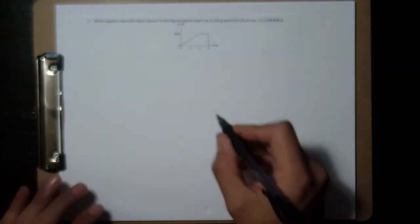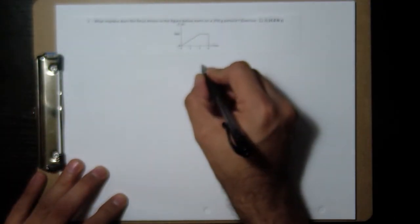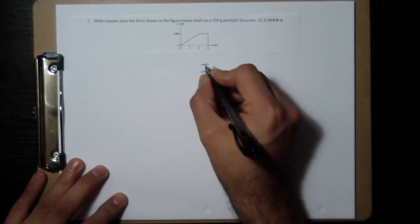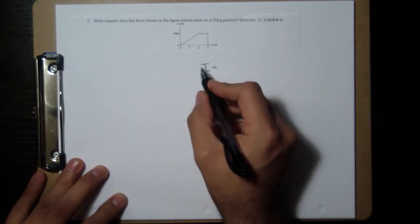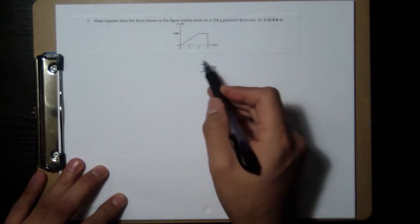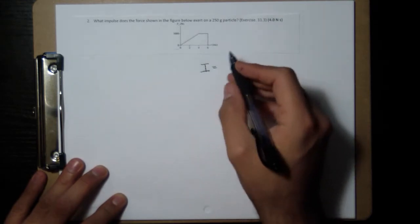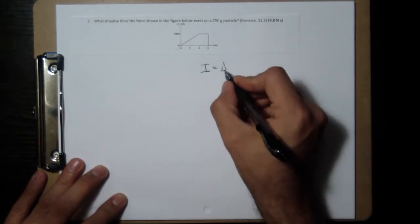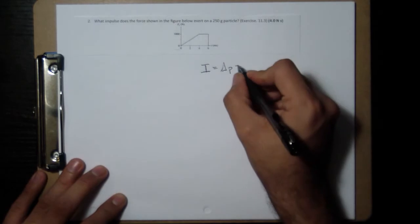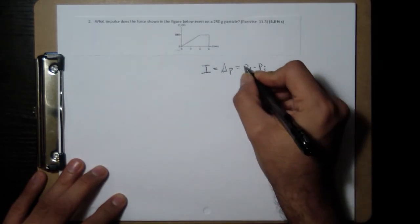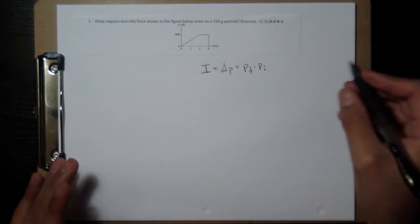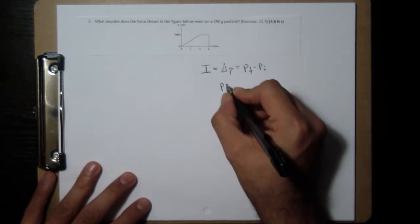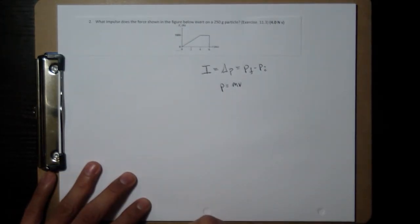So impulse is the change in momentum. Sometimes it's I, but impulse is less talked about, so the symbol for impulse is not always I. But usually it's I, and it's the change in momentum, so it's final momentum minus initial momentum. And you know momentum to be mass times velocity.